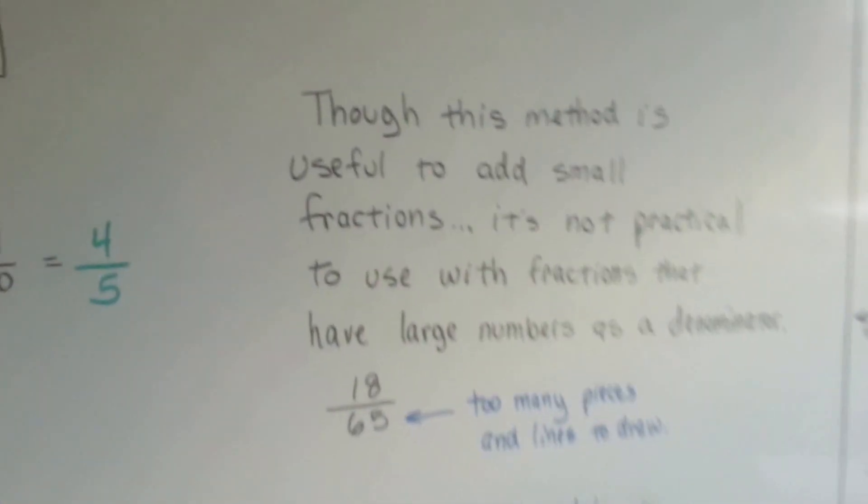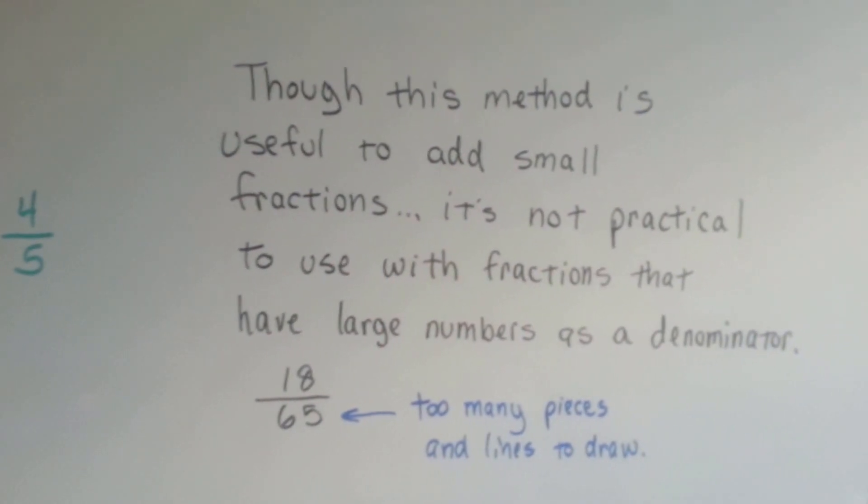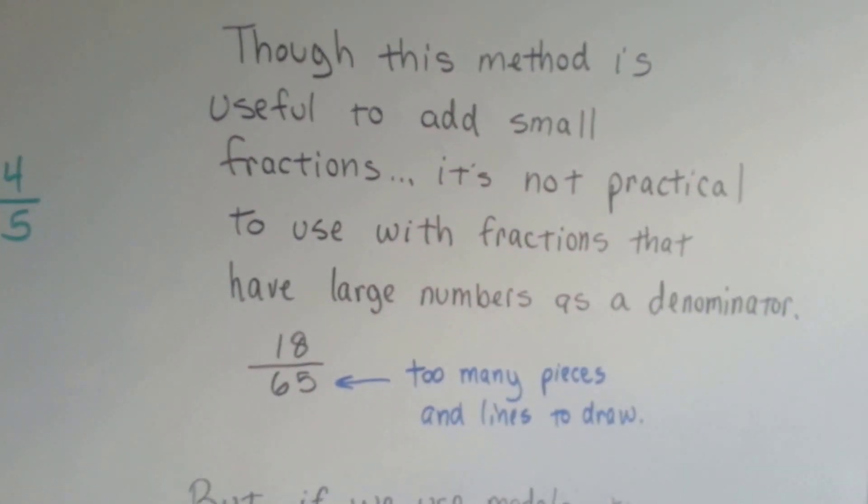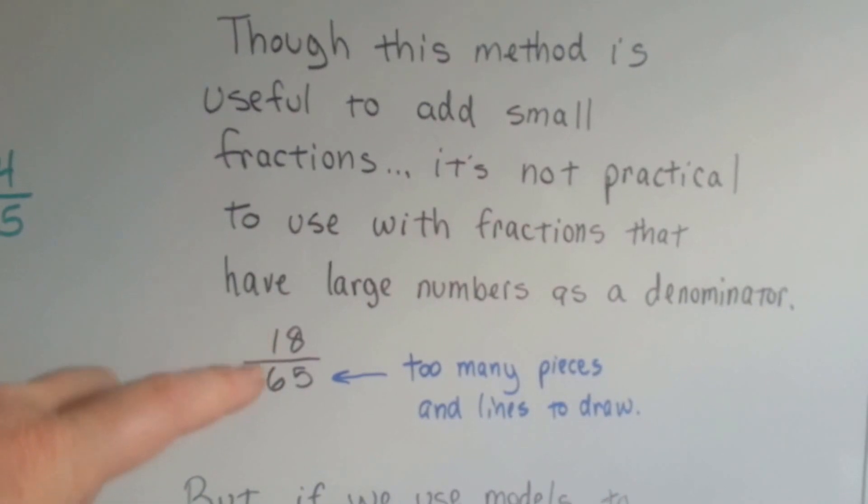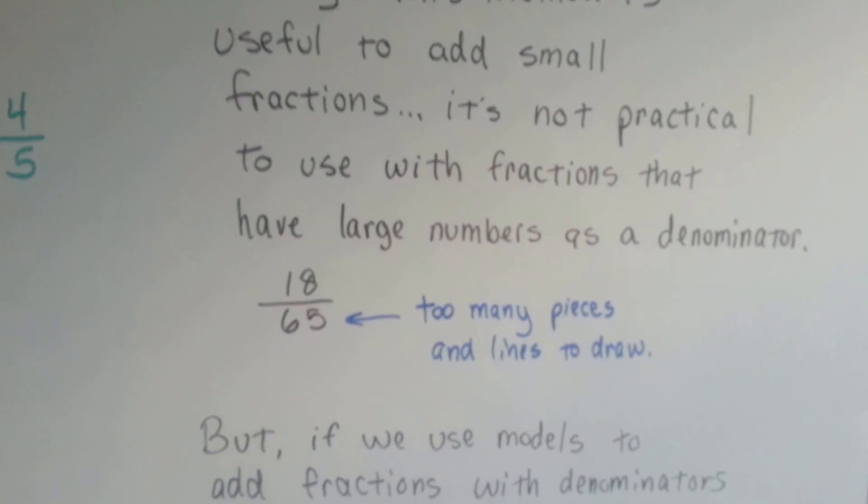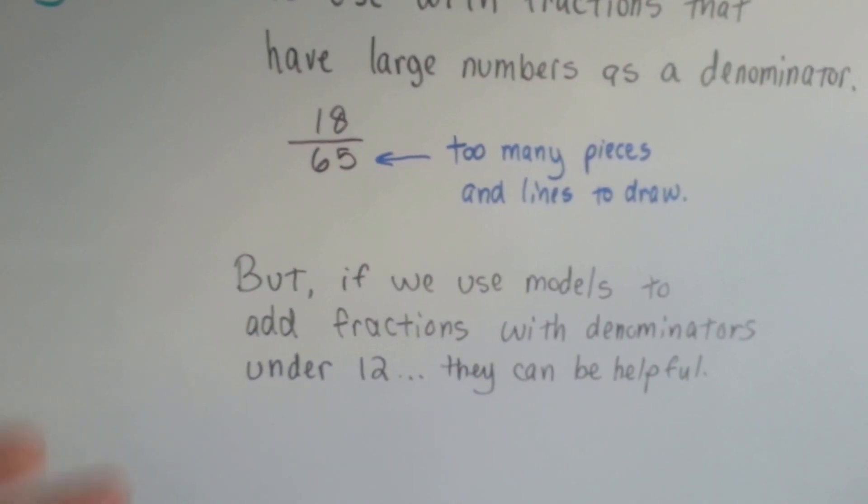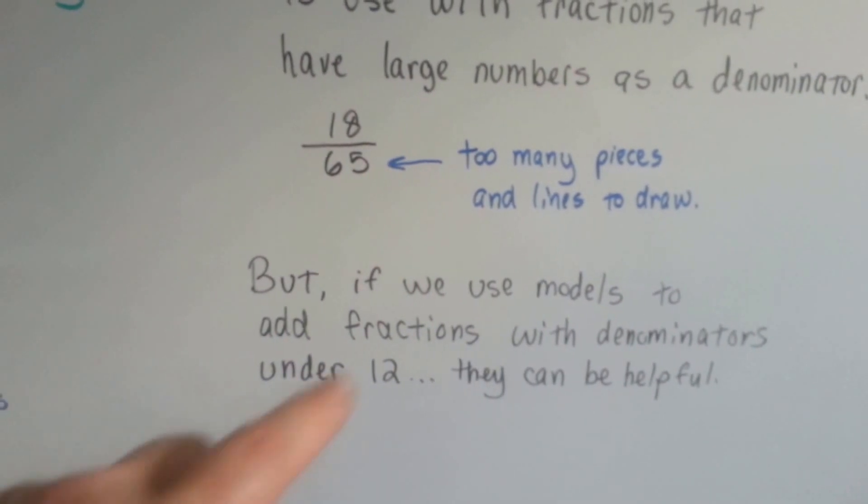Now, though this method is useful to add small fractions, it's not practical to use with fractions that have large numbers as denominators. If you wanted to add eighteen sixty-fifths, there's too many pieces in 65 and too many lines to draw. But if we use models to add fractions with denominators under 12, they can be helpful because 12 is a very easy number to deal with.